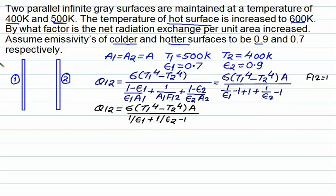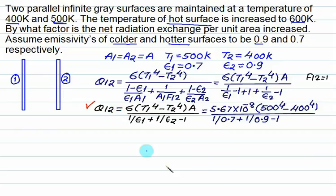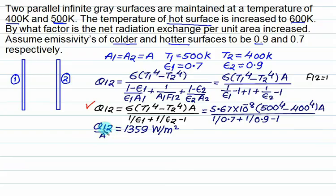Substituting sigma = 5.67 × 10^-8, T1 = 500 K, T2 = 400 K, epsilon_1 = 0.7, and epsilon_2 = 0.9, the denominator is 1/0.7 + 1/0.9 - 1. Dividing by area A, the heat transfer rate per unit area is 1359 W/m².